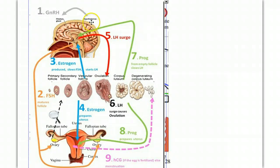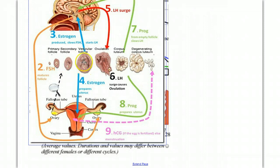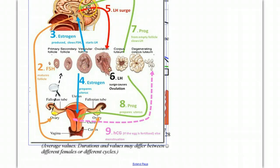Let's follow the numbered steps. One: the hypothalamus releases gonadotropin-releasing hormone, which stimulates the pituitary gland. Two: the pituitary gland secretes FSH, follicle-stimulating hormone, which stimulates the ovaries, and inside the ovary we see the follicle beginning to mature. The maturing follicle secretes estrogen, which has an effect on the brain and also prepares the uterus — building up the endometrium. At low levels, estrogen is inhibitory, but at high levels it causes a surge in LH, or luteinizing hormone, which causes ovulation.